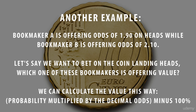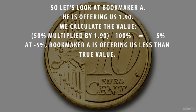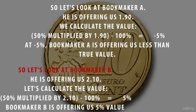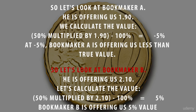We can calculate the value this way: probability multiplied by the decimal odds, minus 100%. At Bookmaker A, offering odds of 1.9, the calculation is 50% multiplied by 1.9, minus 100%, giving an answer of minus 5%. At minus 5%, Bookmaker A is offering us less than the true value — this is not a bet we would want to take. At Bookmaker B, offering odds of 2.1, the calculation is 50% multiplied by 2.10, minus 100%, giving an answer of 5%. Bookmaker B is offering us 5% value to bet on heads in a coin toss — it is indeed a good value opportunity.